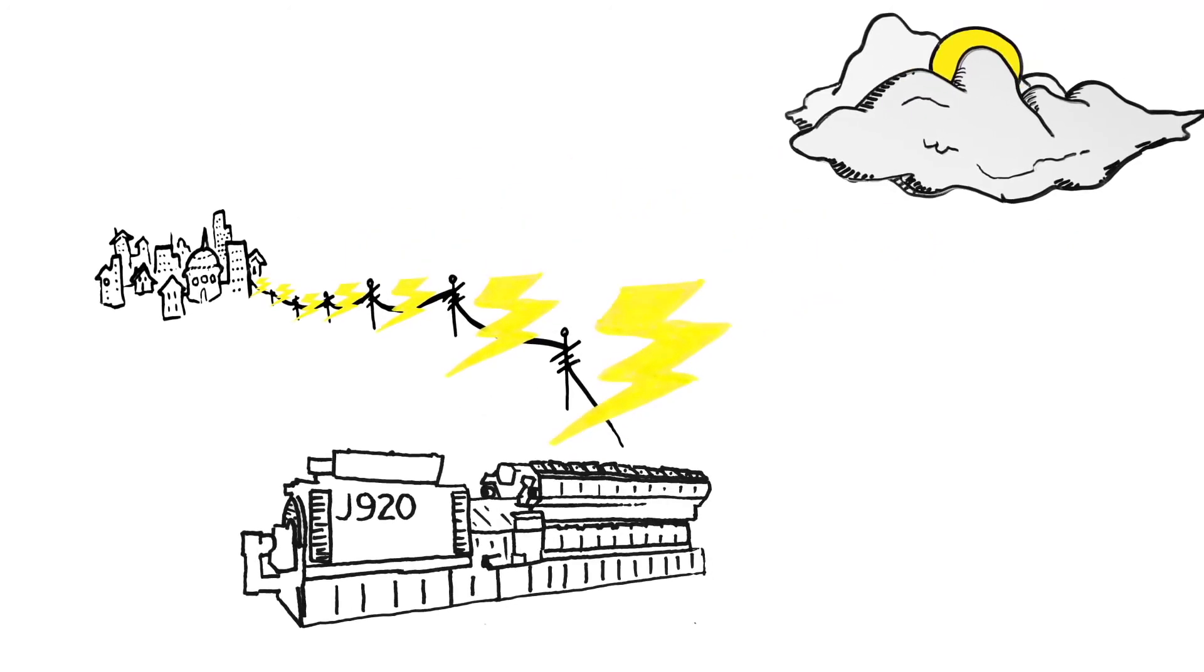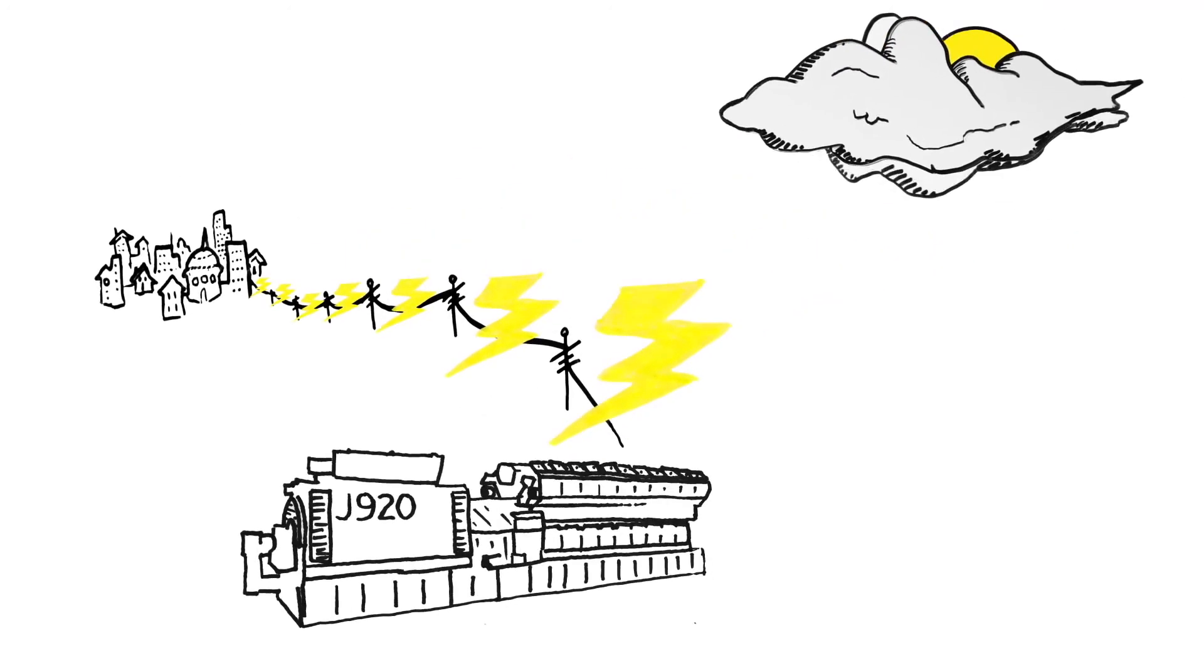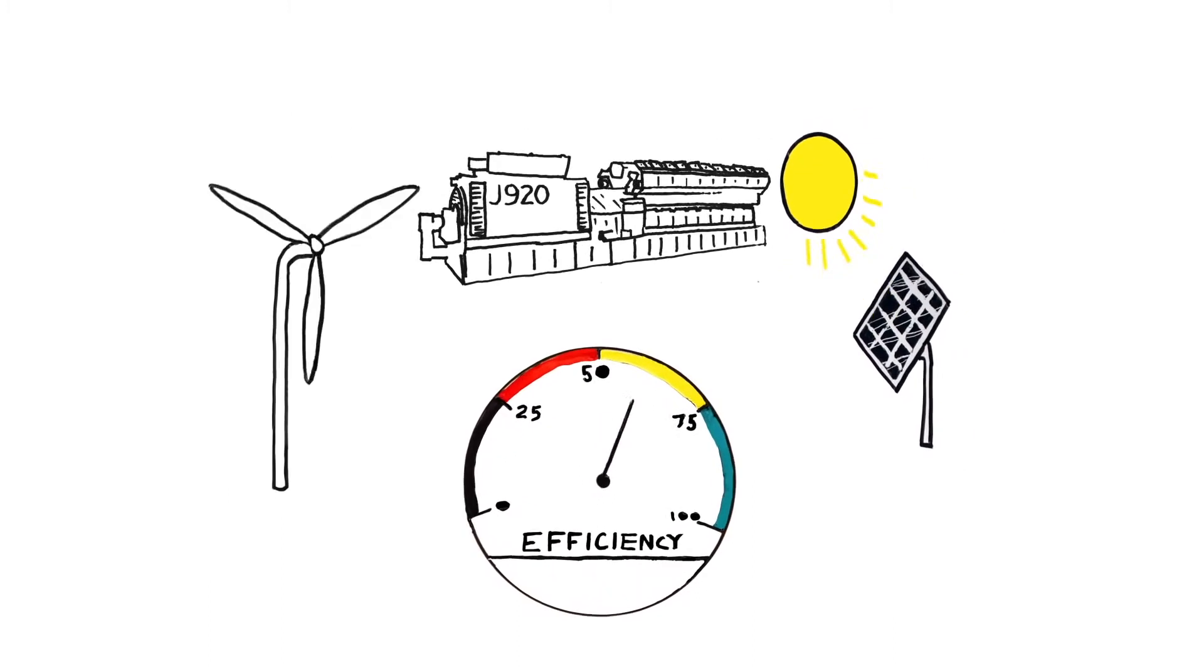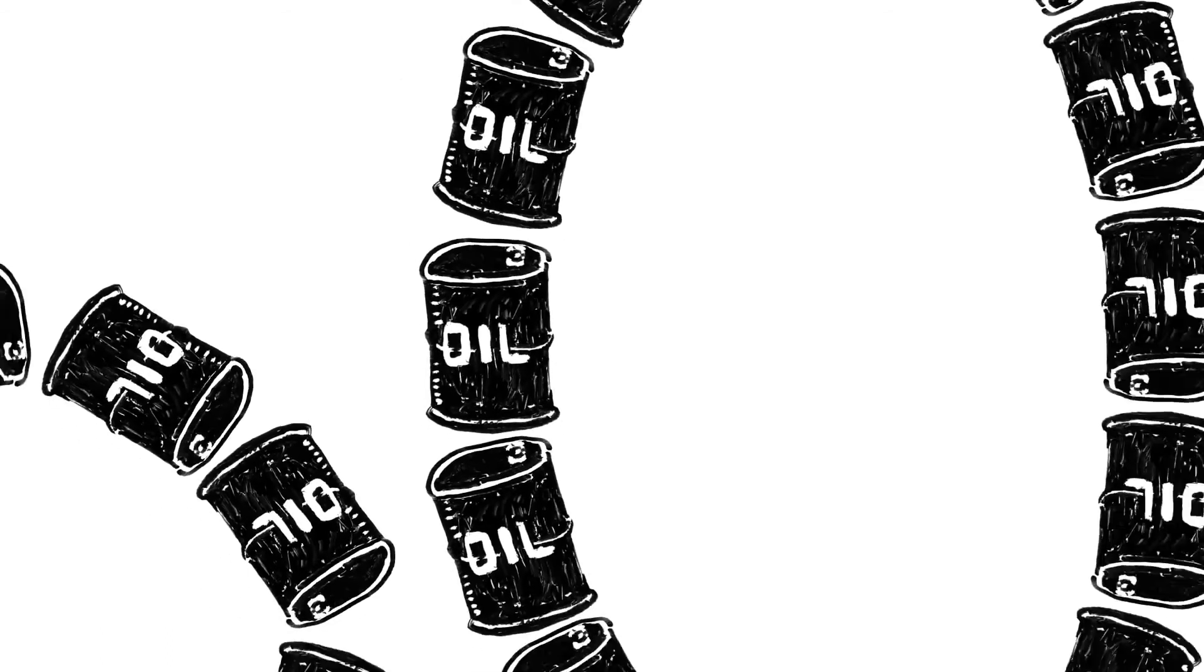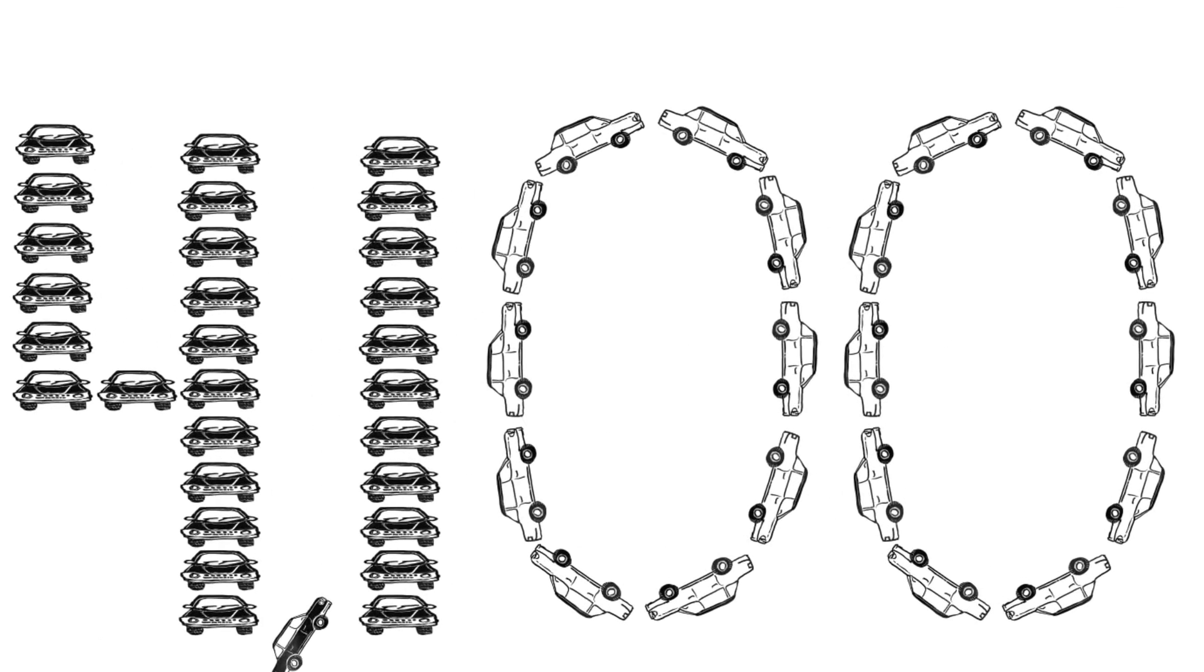Efficiency is important because it means we can use fewer resources to create power. Every year, we could save as much as the amount of energy in 76,000 barrels of oil. The new gas engine is also designed to produce fewer emissions—about the same as having 4,100 fewer cars on the road.